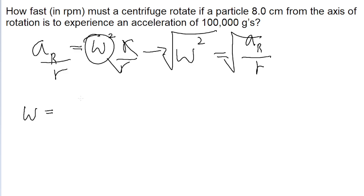So the angular speed omega is equal to the square root of angular speed divided by the radius.